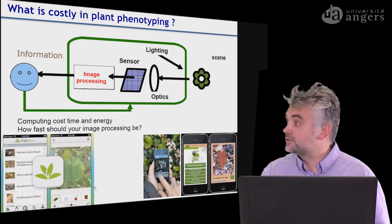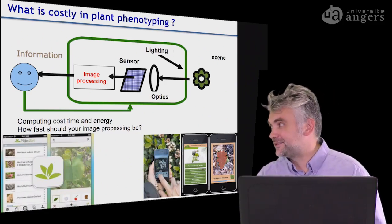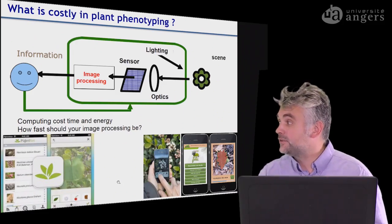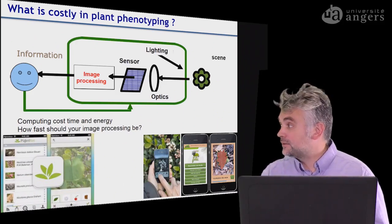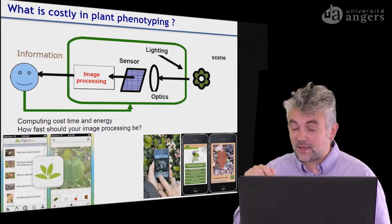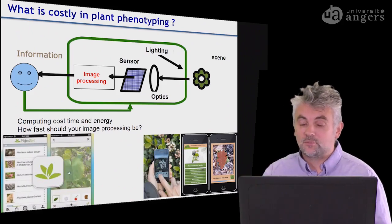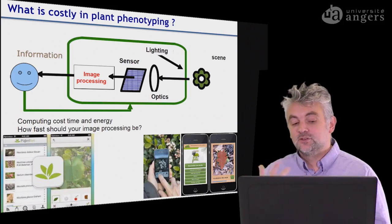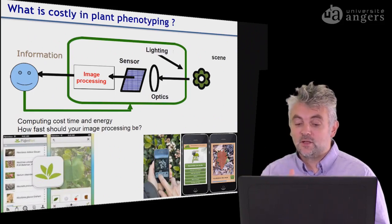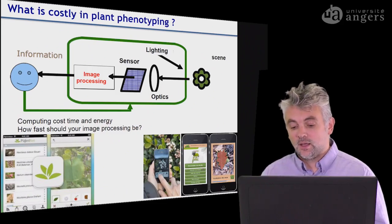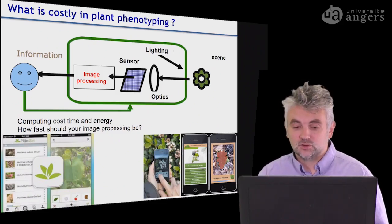These two examples of applications do exactly the same from a user point of view, but differ from an image processing point of view. On the right, the application Folia does the job directly in the phone, while on the left, PlantNet uses a server to get the answer. So with no internet connection there is no answer from PlantNet, while Folia always gives an answer regardless of your internet connection quality.